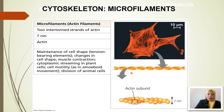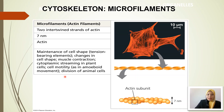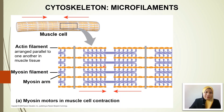For microfilaments, or actin filaments, the subunits are called actin. Their functions include maintenance of cell shape, helping in muscle contraction, cytoplasmic streaming in plant cells, cell motility, and helping during division of animal cells. An example is found in our muscle cells, where the arrangement of actin and myosin filaments helps the contraction and relaxation process.